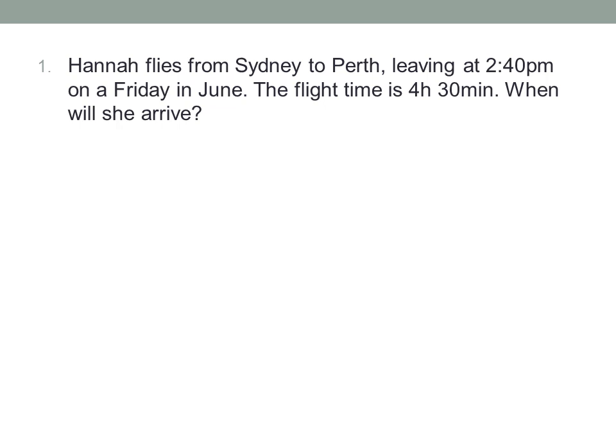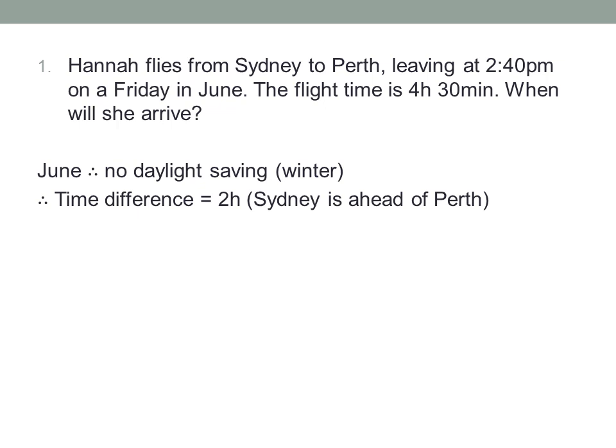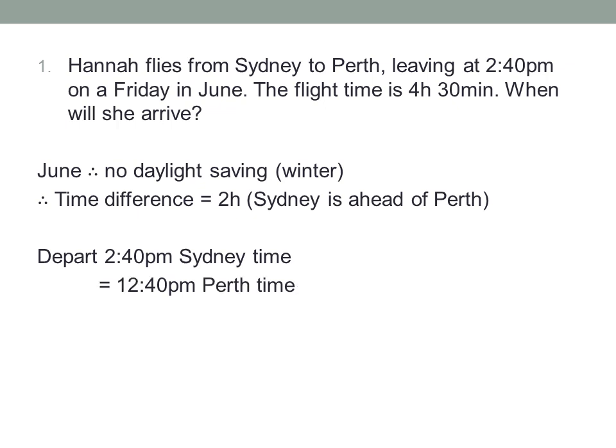First question: is there daylight saving? No, there isn't, because it's June, which is winter here in the Southern Hemisphere. So Sydney is two hours ahead of Perth. Now Hannah departs at 2:40pm Sydney time. What time is that in Perth? Well, Perth is two hours behind Sydney. So at 2:40pm in Sydney, it's still only 12:40pm in Perth. Now add the 4 hours 30 flight time. 12:40 plus 4 hours is 4:40, plus another 30 minutes is 5:10pm. Hannah will arrive in Perth at 5:10pm local time.